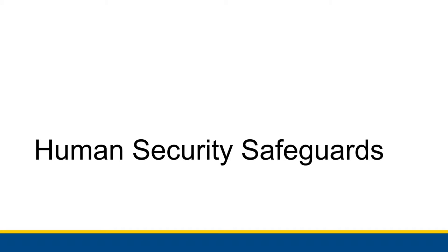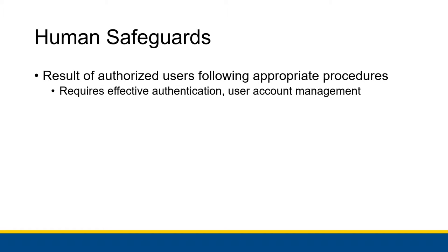We talked about the technical and the data safeguards. Now we're going to talk about some human security safeguards — how we can put safeguards in place regarding the procedures and the people in our information system to keep everything safe. Human safeguards are the result of authorized users following appropriate procedures, and it requires effective authentication and user account management to make sure that our users are authorized and are actually acting in good faith.